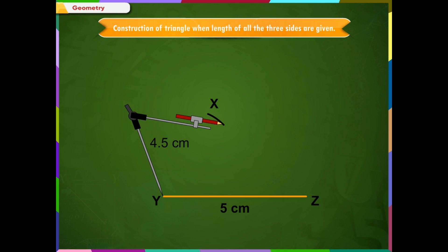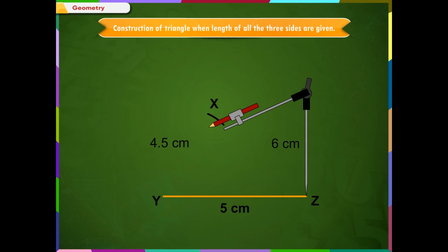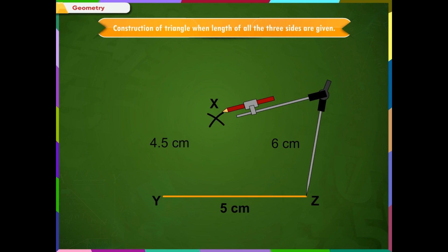Step 3: From Z, point X is at a distance of 6 cm. So, with Z as center, draw an arc of radius 6 cm.